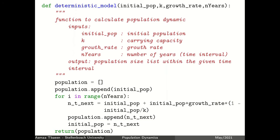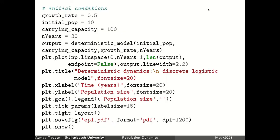This is the code used to generate the discrete logistic model simulation. The inputs to the function are the initial conditions and the output is the population size at each time step. The time interval has to be specified in the initial inputs, and these are the code lines used for plotting the logistic equation dynamics.